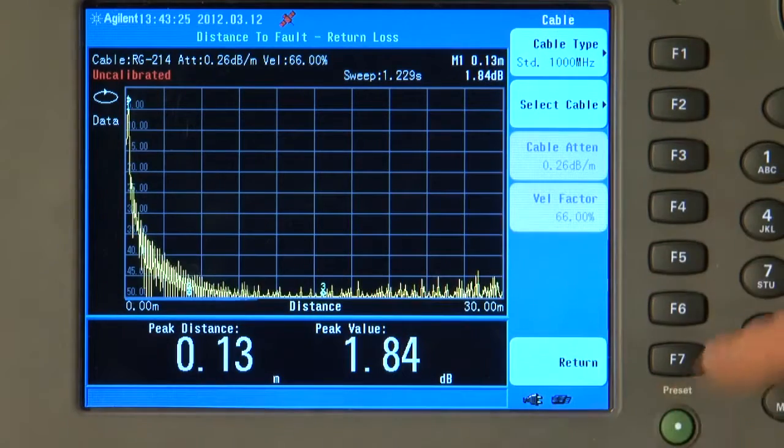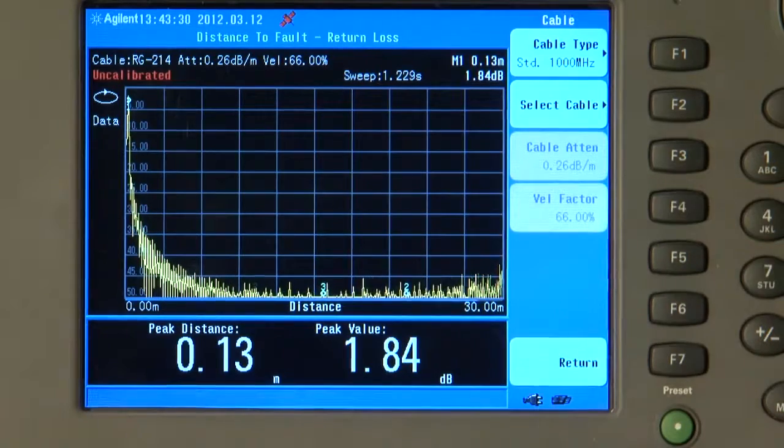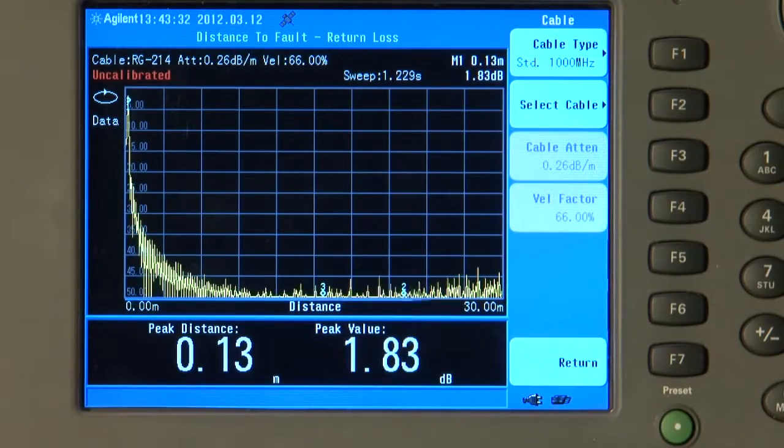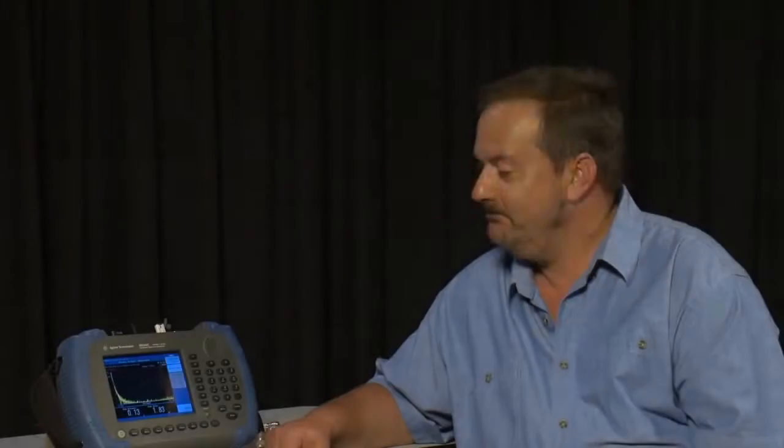But if your cable was not in that list, you can easily enter your own values of cable attenuation and velocity factor directly from the cable manufacturer's datasheet. Now, I know this cable is less than 15 meters long, so I will set the stop distance to 16 meters.